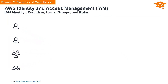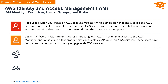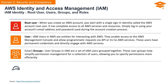When you create an AWS account, it comes with a single sign-in identity known as the AWS account root user, which has complete access to all AWS services and resources. IAM users are entities designed for interacting with AWS, enabling access to the AWS Management Console and permitting programmatic requests via API or CLI. IAM user groups are collections of IAM users grouped together for simplified permission management, streamlining the process of specifying permissions for a collection of users.